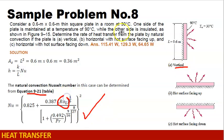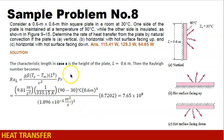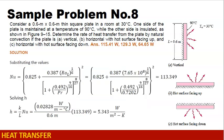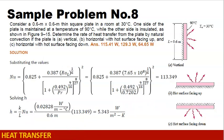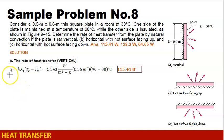We will solve for the Rayleigh number first. Note that for a vertical plate, the characteristic length equals the height of the plate, which is 0.6 meters. Substituting all the values, the Rayleigh number is 7.65 times 10 to the 8th power. Substituting into our Nusselt number equation, the Nusselt number is therefore 113.349. Finally, we solve for H using the convection coefficient equation in terms of the Nusselt number, and we get the heat transfer when the plate is vertical: 115.41 watts.